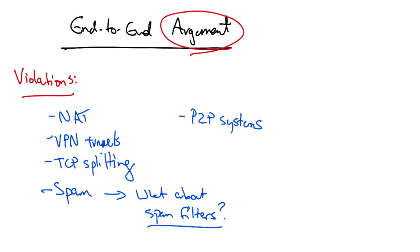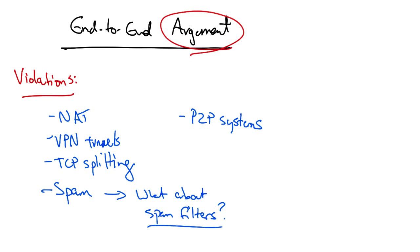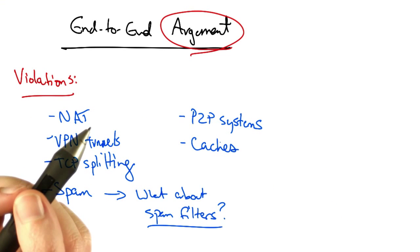What about peer-to-peer systems where files are exchanged between two nodes on the internet but are assembled in chunks that are often traded among peers? What about caches and in-network aggregation?